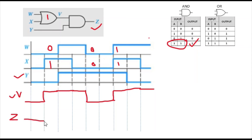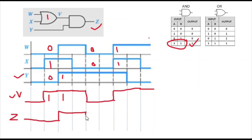Initially y and V are both 0, so Z remains 0. When V becomes 1 but y is still 0, Z stays 0 — only 1 and 1 gives 1. When both V and y are 1, Z becomes 1 and remains 1. Then when V goes to 0 for that whole duration, Z goes back to 0. For the next pulse where both V and y are 1, Z goes to 1 again.